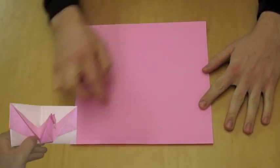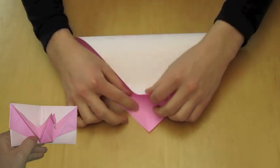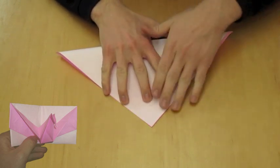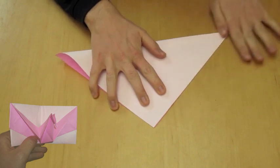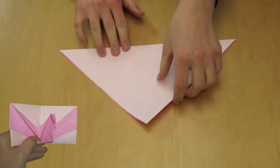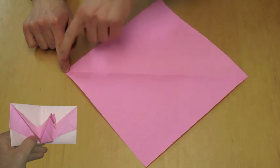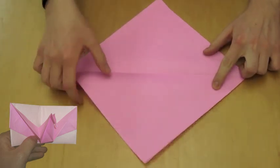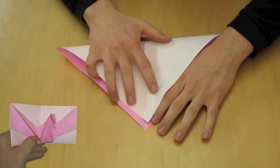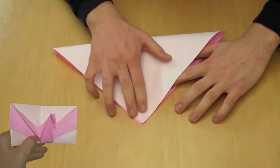All right, so the first step is to create an X in the paper. You'll do this by first creating a diagonal line. That's called a valley fold. Now you're going to unfold the piece of paper and create a valley fold with the other two sides. A valley fold is where you fold the paper towards yourself.